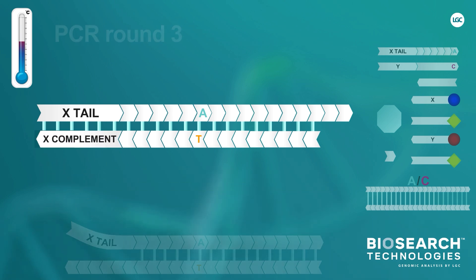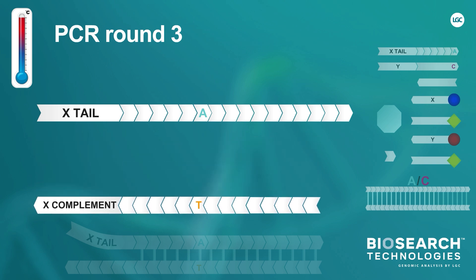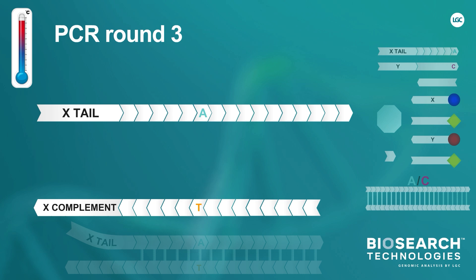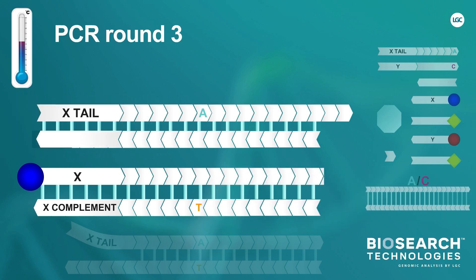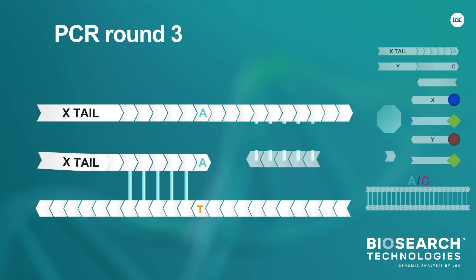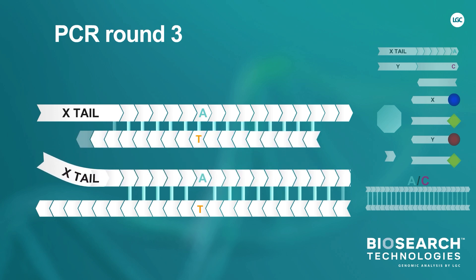CAASP PCR round 3 again starts with the denaturation of the double-stranded DNA. This DNA consists of both the original DNA template and PCR products generated during PCR rounds 1 and 2. This animation will first focus on the PCR product that has both the allele-specific tail sequences and its complementary sequence incorporated within it. During the annealing step, the presence of the X complement allows the FAM labeled oligonucleotide from the reporter cassette to bind and extend. It's important to note that whilst this is happening, the original DNA template and other PCR products will be denatured and extended. This is crucial as it results in a continually increasing number of PCR products containing the X complement. These PCR products will enable an increasing proportion of the FAM labeled oligonucleotide from the reporter cassette to bind and extend during subsequent rounds of PCR.